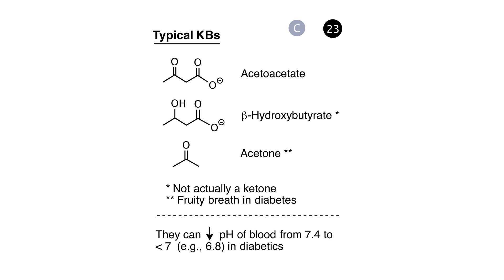One last point regarding this storyboard: acetoacetate and beta-hydroxybutyrate are acids. In diabetics, these acids can be produced in sufficiently high concentrations to lower the pH of the blood quite substantially. Lowering the pH is the same as increasing the concentration of protons in the blood, and these concentrated protons have physiological relevance. When a diabetic enters the phase where blood pH is dangerously low, that's called diabetic acidosis.